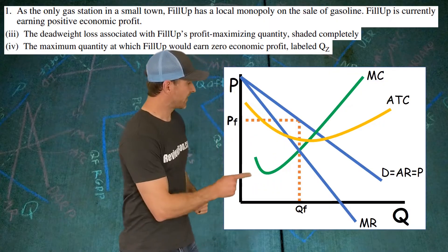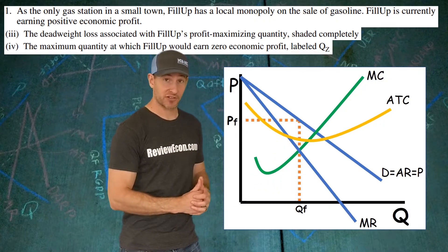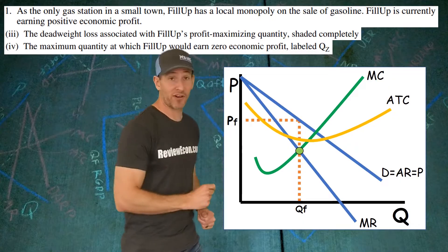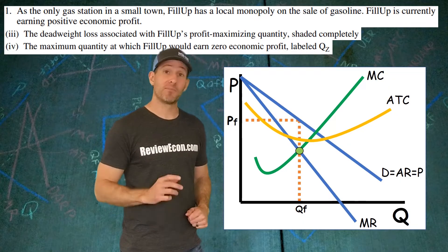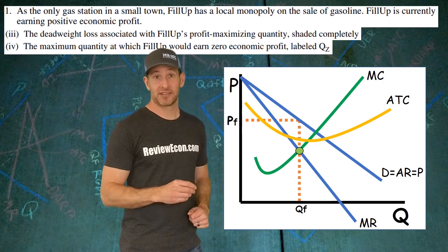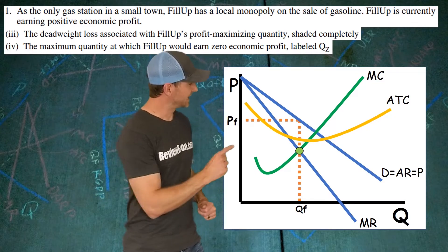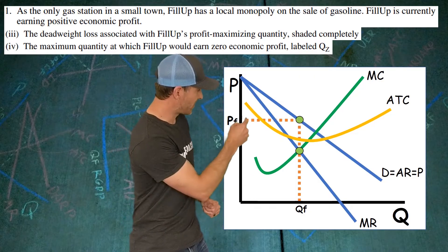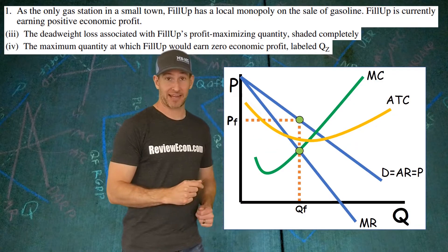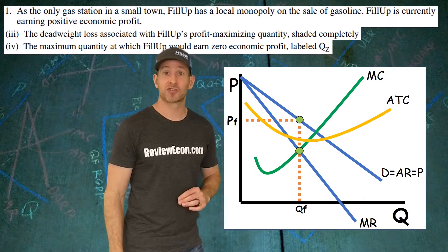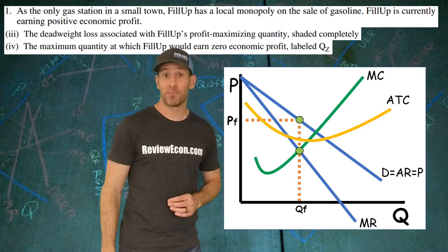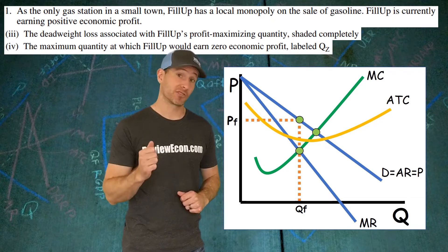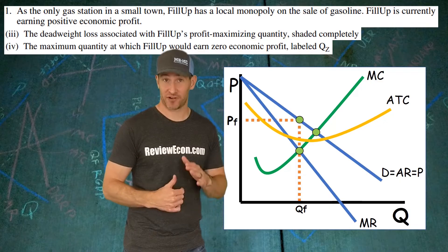Next, find the dead weight loss for this monopoly. At the profit maximizing quantity, find the marginal cost on the MC curve, then find the marginal benefit at the demand curve — for a good with no externalities, marginal benefit is found at demand. The third point is the allocatively efficient point, where demand equals marginal cost, or price equals marginal cost as stated in AP FRQ rubrics. Those three points form the dead weight loss triangle.